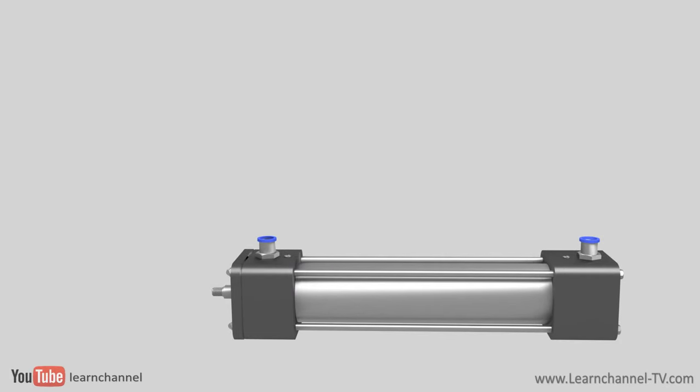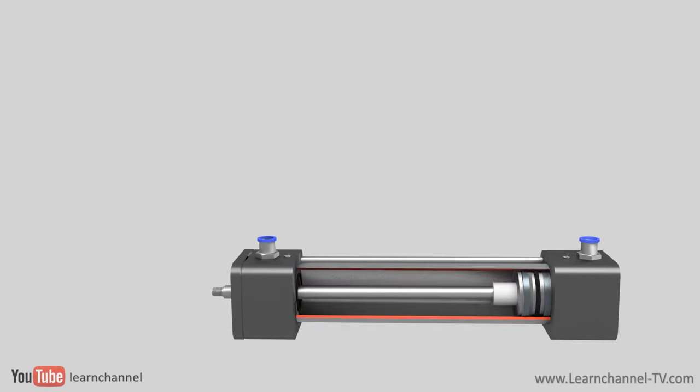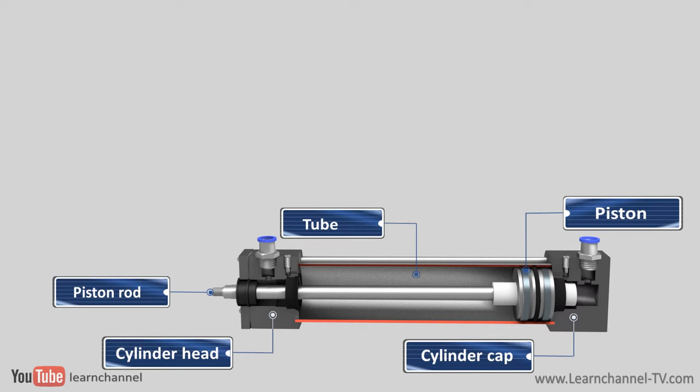The function of cylinders with a piston rod is very simple. A tube, closed on both ends with a cap and head, has a drive piston.